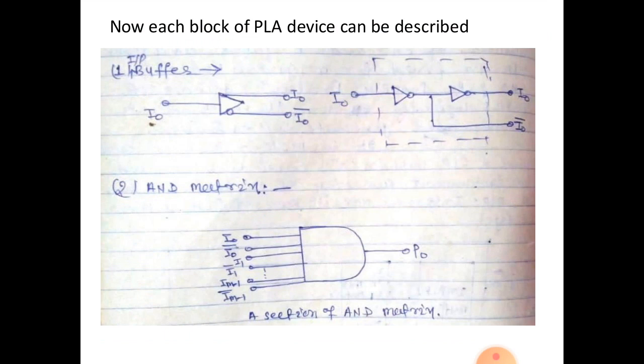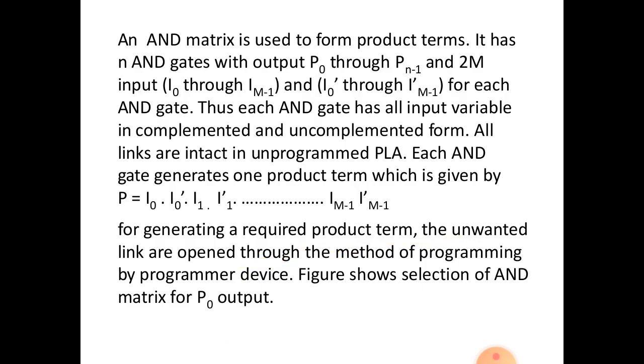Now AND matrix. AND matrix gives inputs I0, I0 bar, I1, I1 bar, dot dot, Im minus 1 and Im minus 1 bar. That is 2M inputs. Gate outputs P0, P1, P2, P3. This P0, P1, P2, P3 is also the inputs of OR gates.